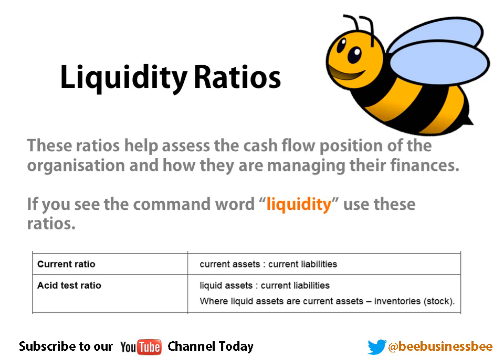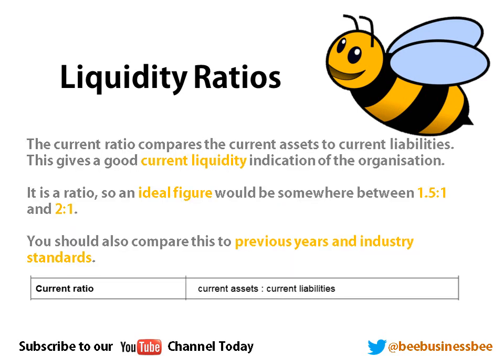Another form of ratios you may use are liquidity ratios. Liquidity ratios help to assess the cash flow or liquidity position of the organisation. Typically you're going to see the word 'liquidity' as the command word in exam questions. Ratios you may use to assess liquidity tend to be the current ratio and the acid test ratio. The current ratio compares current assets to current liabilities — current assets is money owed to us within one year, and current liabilities are all the things we owe within one year.